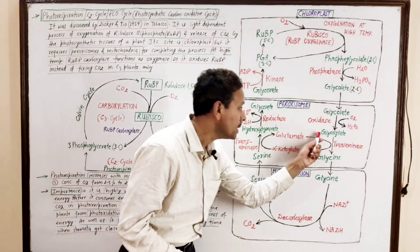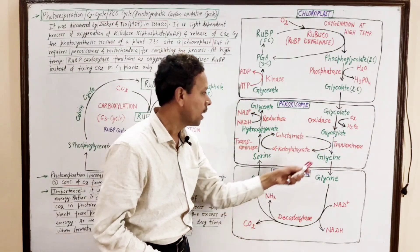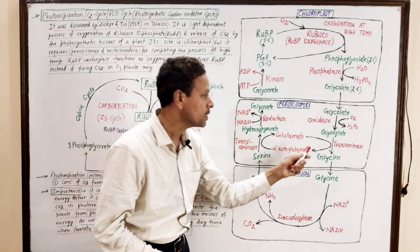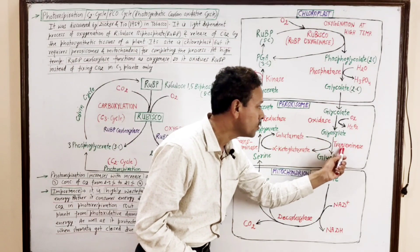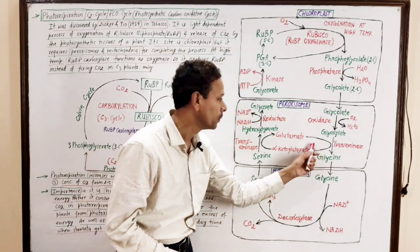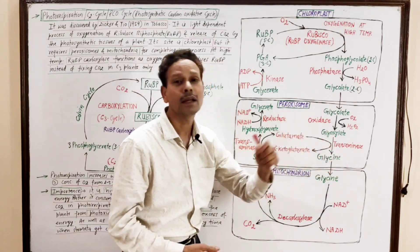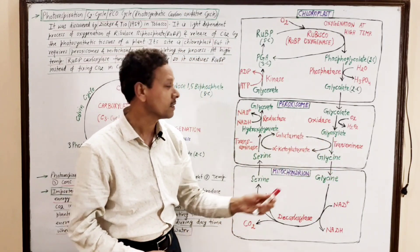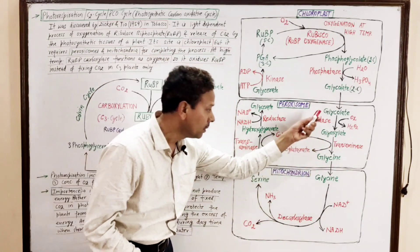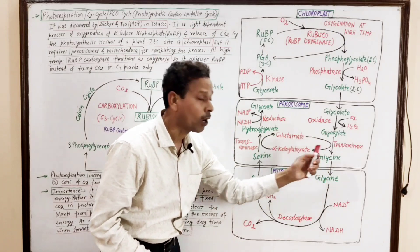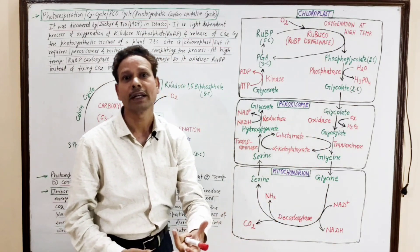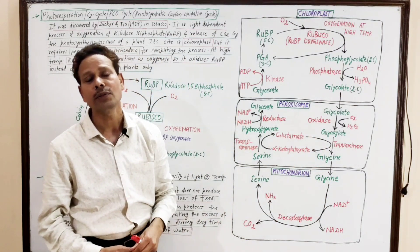This glyoxylate undergoes transamination, catalyzed by a transaminase enzyme, to produce another amino acid — glycine. This glycine molecule then enters the next cell organelle, which is the mitochondria.